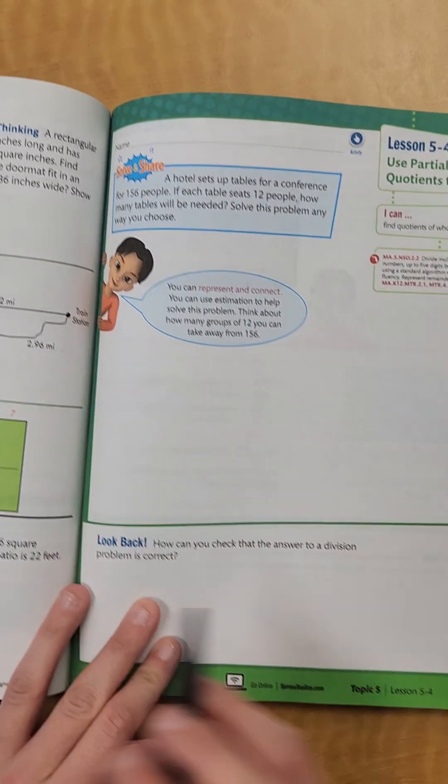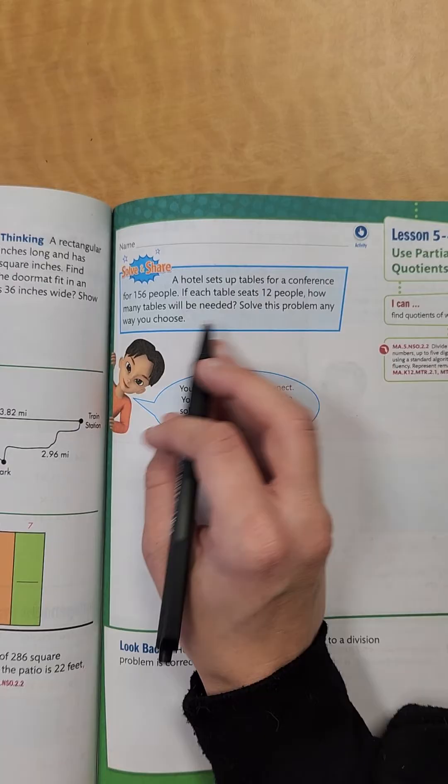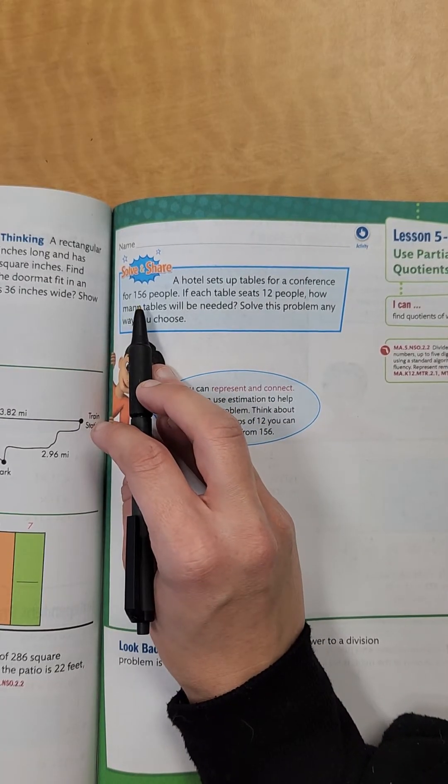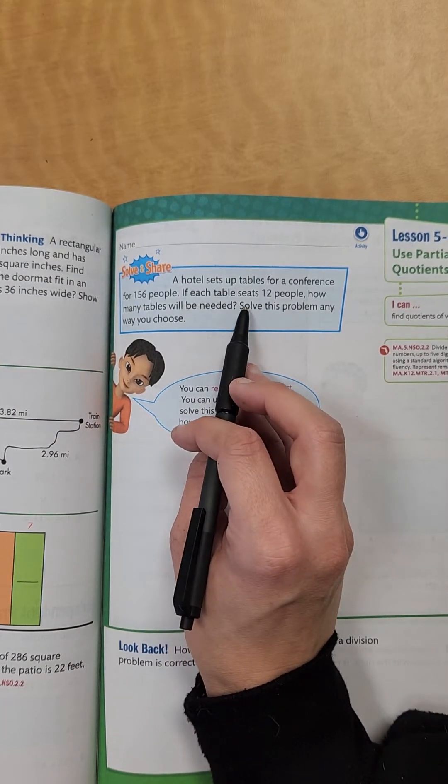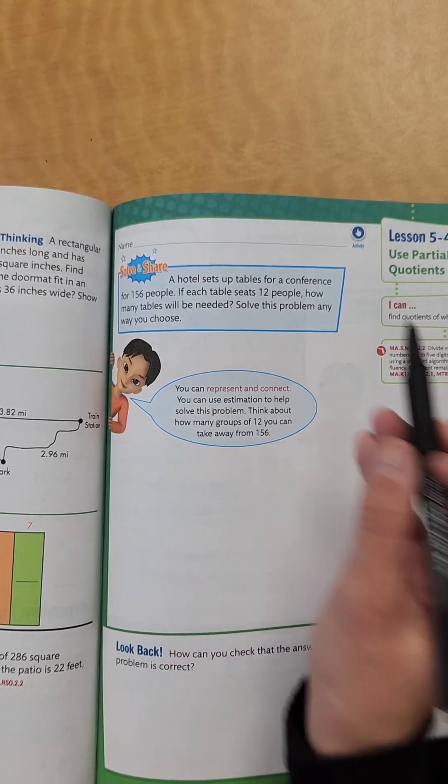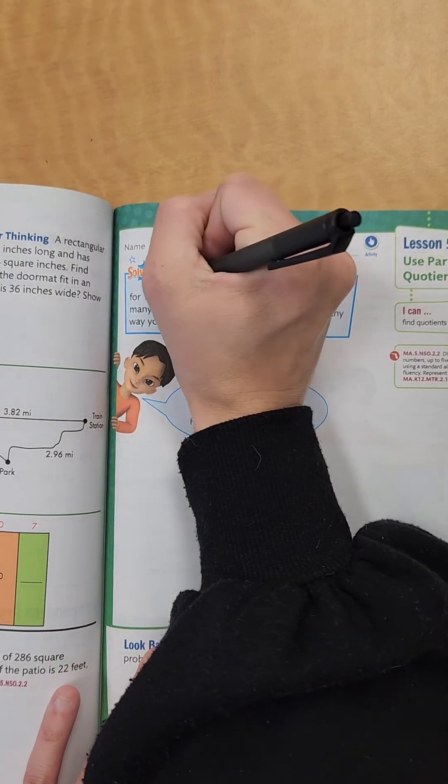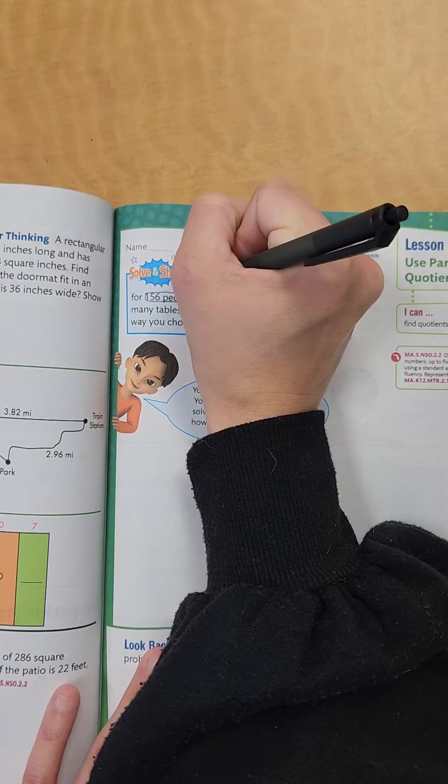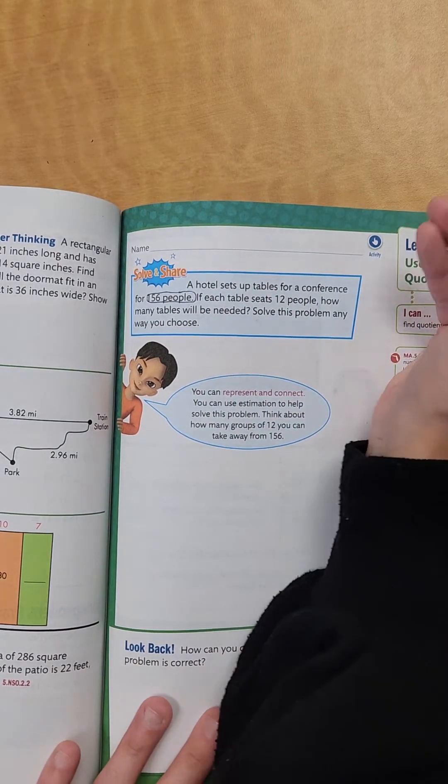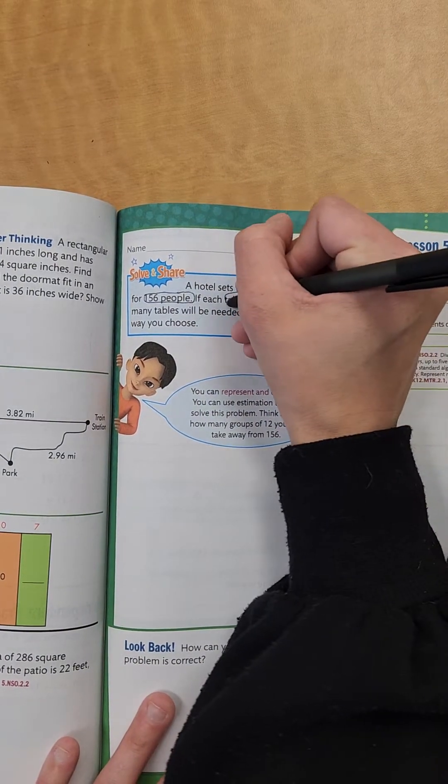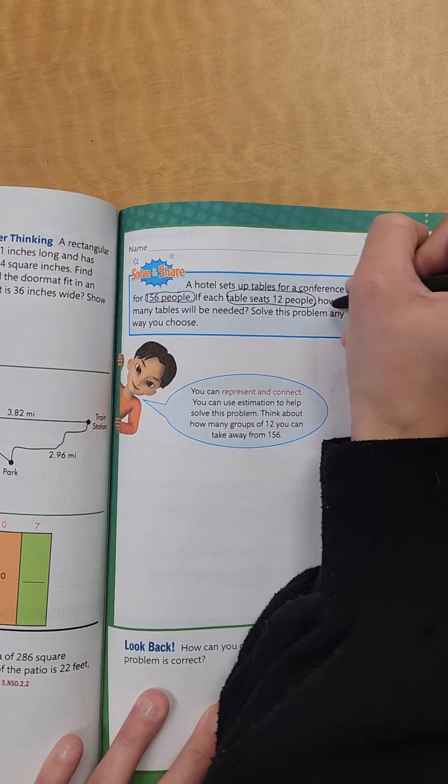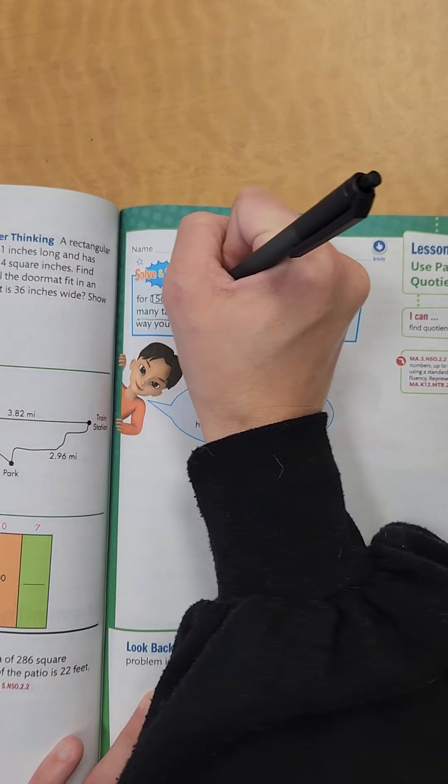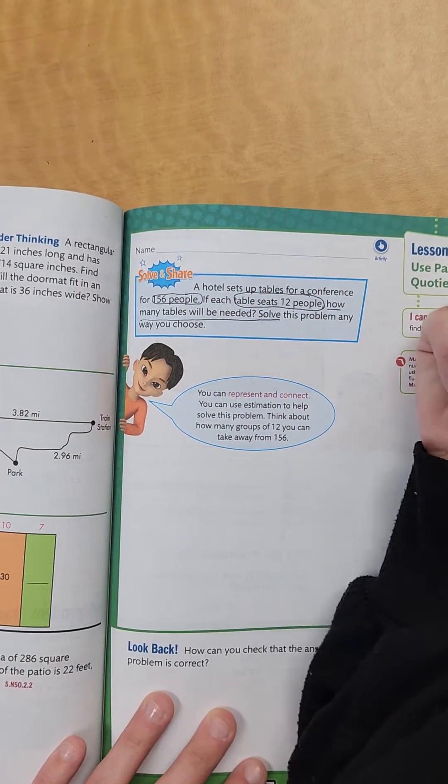It says, go back to page 203, a hotel sets up tables for a conference for 156 people. If each table seats 12 people, how many tables will be needed? So we have 156 people, so I'm going to circle that, that's our total amount of people, and each table is going to have 12 people, so we need to figure out how many tables will be needed.